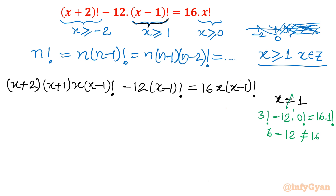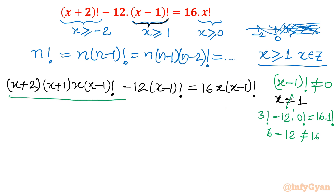Also, (x-1)! of any number cannot be zero — we know 0! = 1 and 1! = 1. None of the factorial values ever equal zero. So we can safely divide the entire equation by (x-1)!.